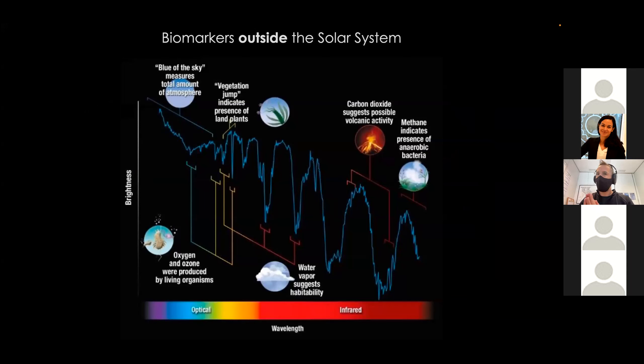This slide will appear afterwards, but here I want you to see that there is the blue of the sky, the vegetation jump, which we call now the red edge, we have oxygen and ozone, we have water vapor, we have carbon dioxide, we have methane, and we have many other things.